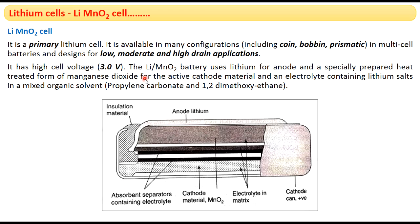This cell produces a voltage of 3 volts. It uses metallic lithium as the anode material. Metallic lithium acts as the anode in this battery, and especially preheated manganese dioxide is used as the active cathode material.